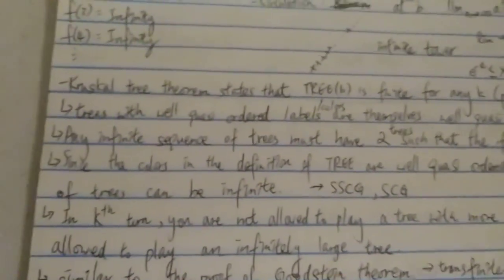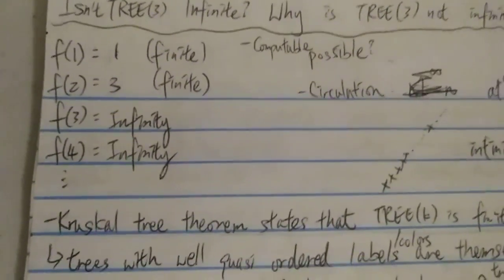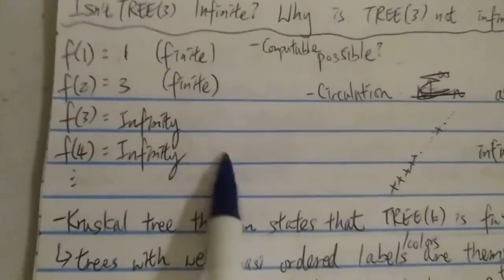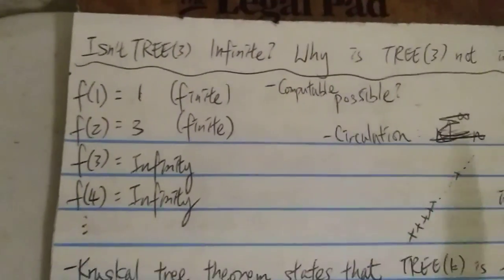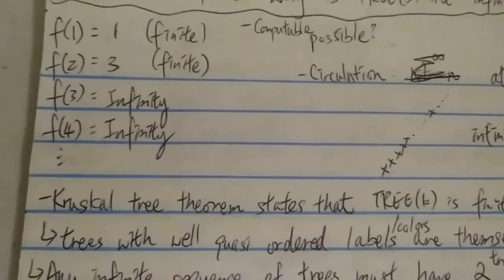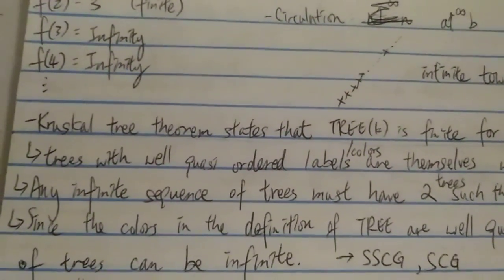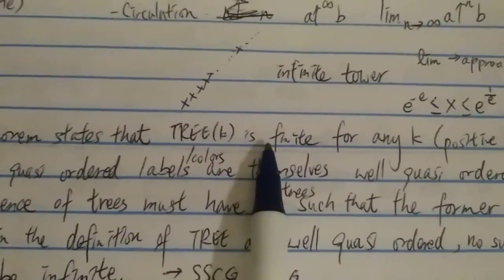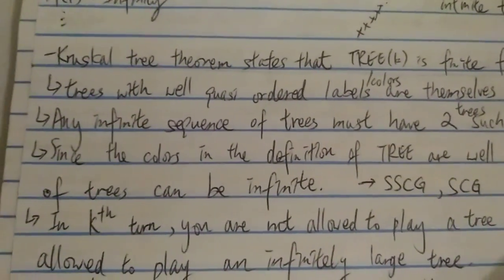Some people's first thought after seeing this pattern is TREE(3). So is this even possible for a computable function? I would say it's hard to believe — it's actually easier to believe TREE(3) is finite than to believe in a computable function with this behavior. Basically, TREE(3) is finite because it is stated in the Kruskal tree theorem — the theorem itself already states that TREE(k) has to be finite for any positive integer k.